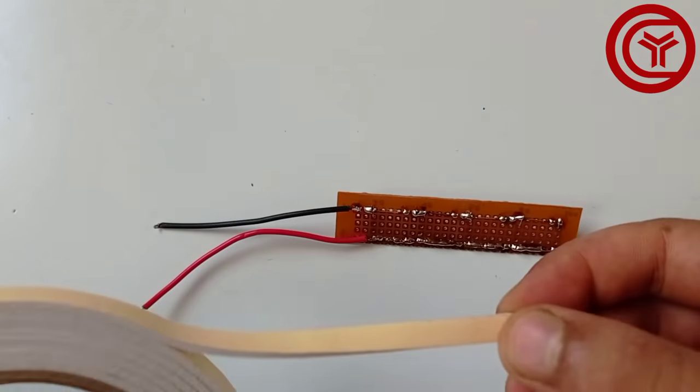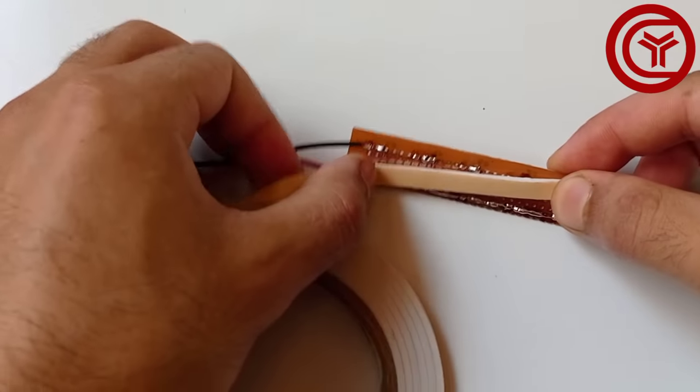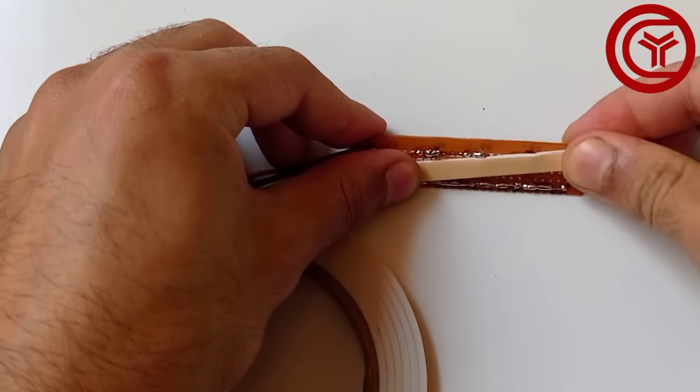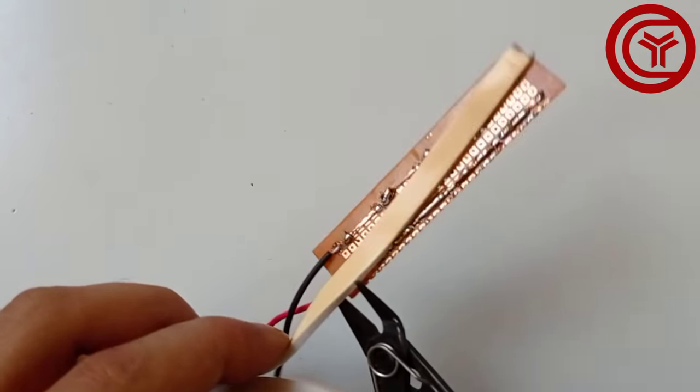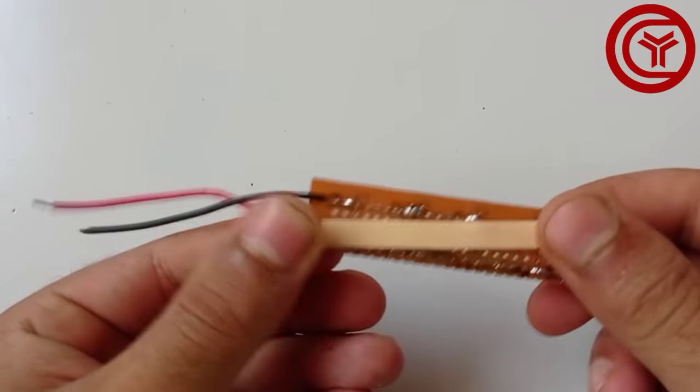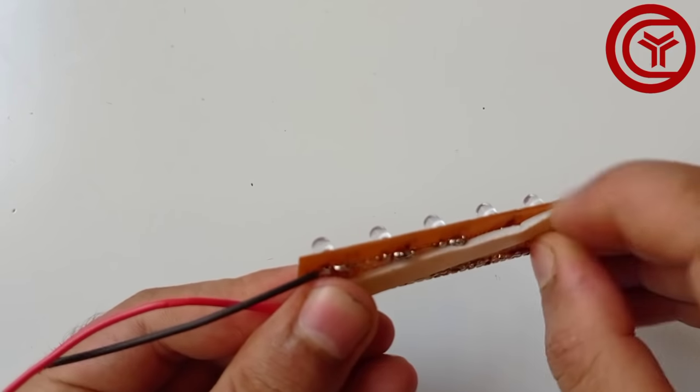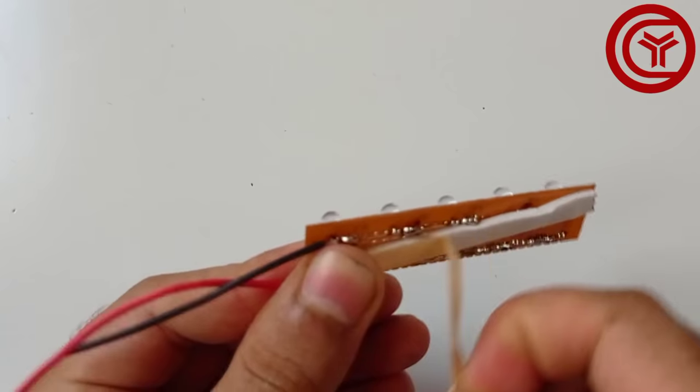You can apply little foam tape on back of this board. Then peel the cover of tape.